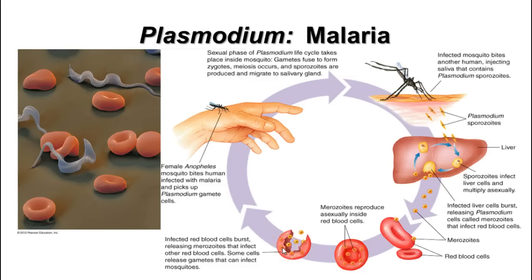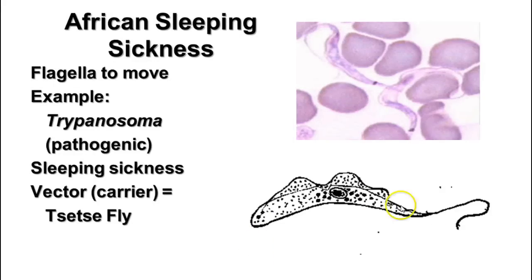Malaria causes recurring bouts of very high fever and violent chills, repeating every three to five days depending on the species—this corresponds to when the red blood cells rupture, damaging cells and stimulating a fever response. African sleeping sickness is caused by trypanosoma, which has a flagella. It causes fever and chills and eventually coma and death. It is found in parts of Africa, carried by the tsetse fly and transmitted by its bite, similar to malaria. This concludes the notes on protista.